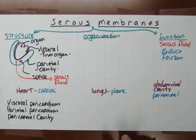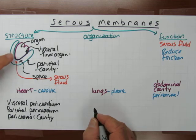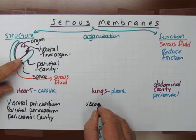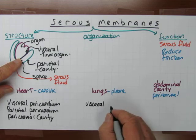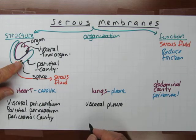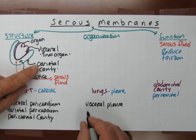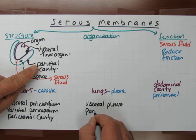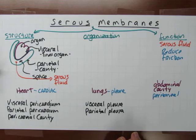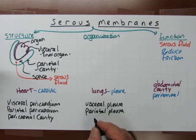For the lungs, you have the same structure. The visceral layer — the layer which actually touches the lungs — would be the visceral pleura. The layer that lines the cavity the lungs are found in would be the parietal layer, so it would be the parietal pleura. The space between them would be the pleural cavity.